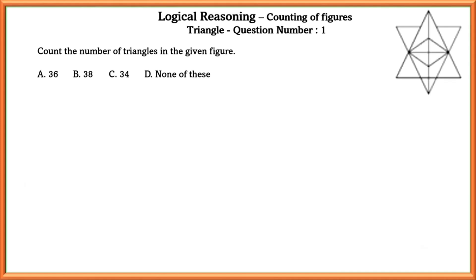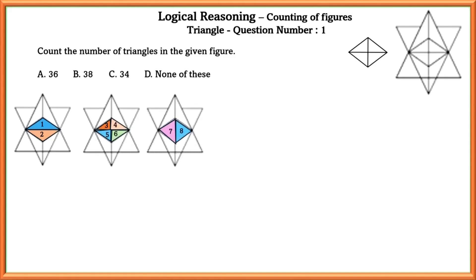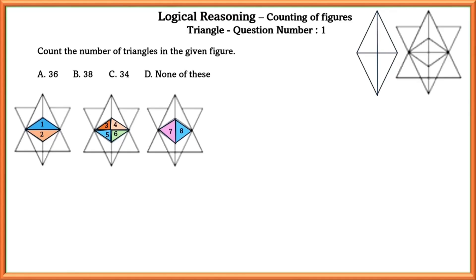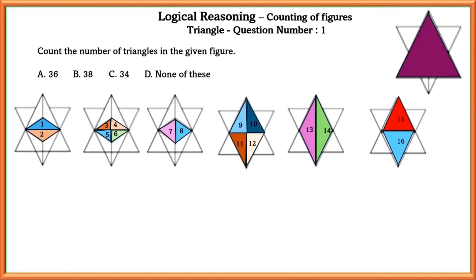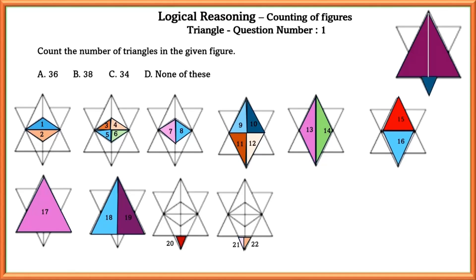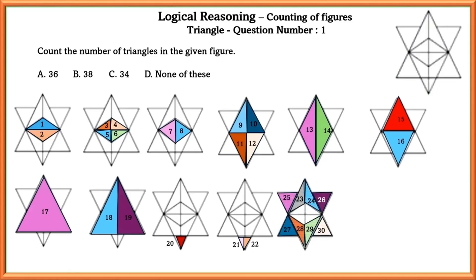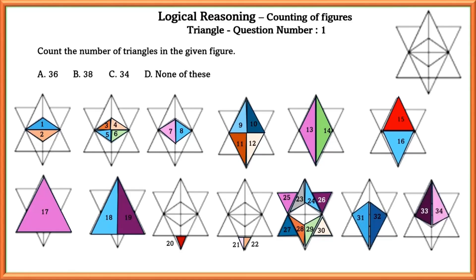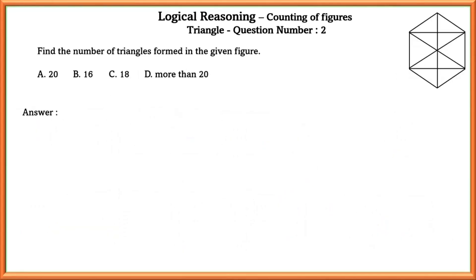Counting of figures — triangles. Question number one: count the number of triangles in the given figure. Here we have one rhombus. When a rhombus is bisected by two diagonals, we get eight triangles. Similarly, there is one more rhombus, so we get another eight triangles. When one triangle is bisected by a median, we get three triangles. Similarly, the bottom triangle bisected by a median gives three more triangles. Counting all remaining triangles, the answer is 34.